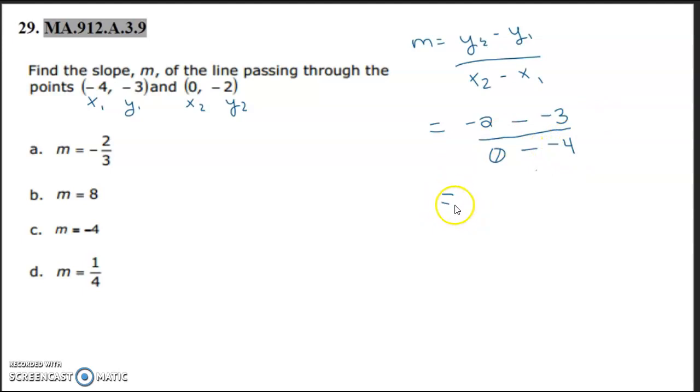So now we're going to go ahead and solve. Negative 2 minus negative 3. Well having two negatives just makes it a double negative, makes it a plus positive. So we actually have negative 2 plus positive 3, which is 1. And then this does the same thing, so 0 plus 4 is 4. So your answer is...